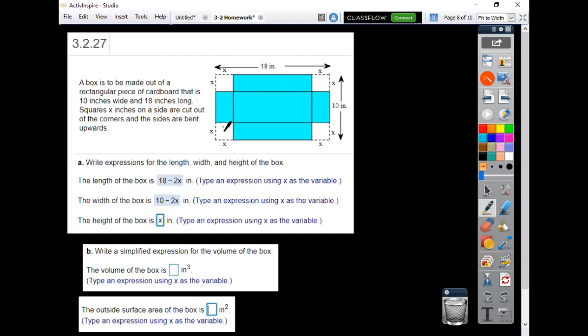So you would have your length of the box here, your width here, and the x of the corners when it's folded up would be the height of the box. This total, this length here would be this whole 18x, take away this x and take away this x.